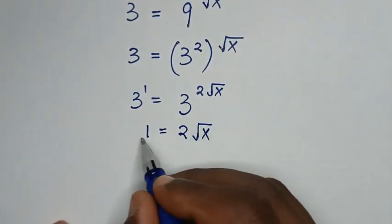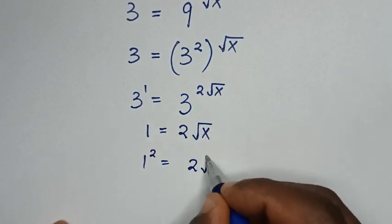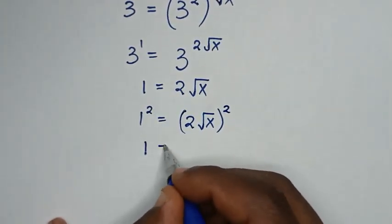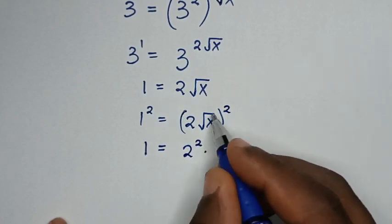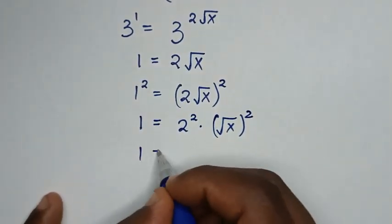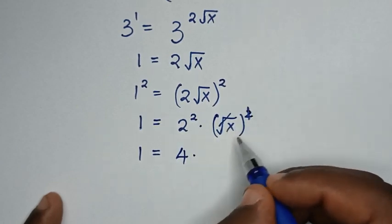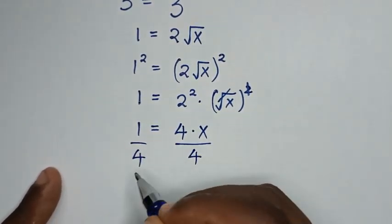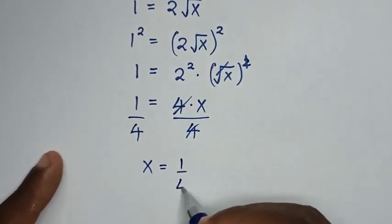Comparing powers gives us 1 is equal to 2 times square root of x. To remove the square root, we square both sides: 1 squared equals 2 square root of x, all squared. So 1 equals 2 squared, which is 4, times x. Dividing both sides by 4, x is equal to 1 over 4. This is the final answer.